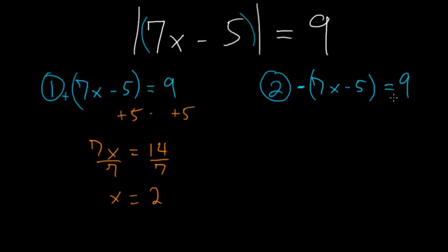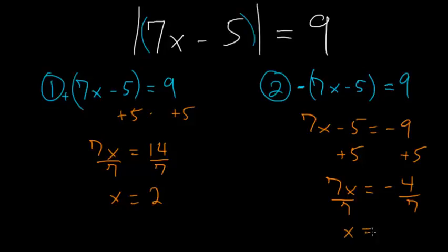And on the right hand side, we can multiply everything by negative 1 so that we have 7x minus 5 is equal to negative 9. And then adding 5 to each side, we have 7x is equal to negative 4. And now we just have to divide by 7, so that we're left with x is equal to minus 4 sevenths.